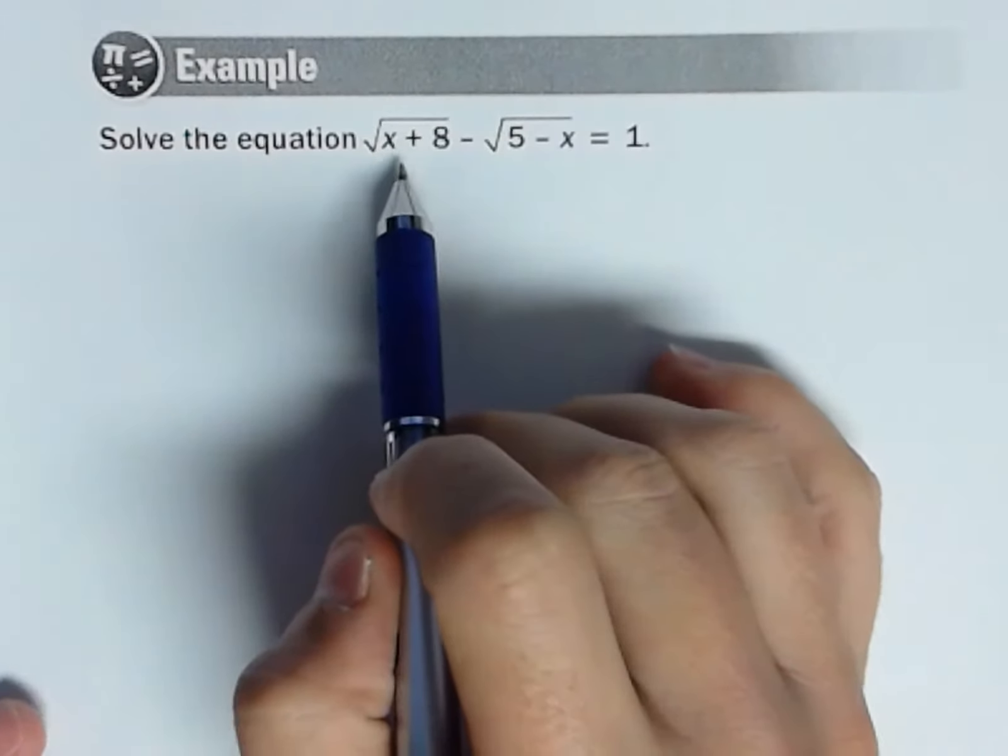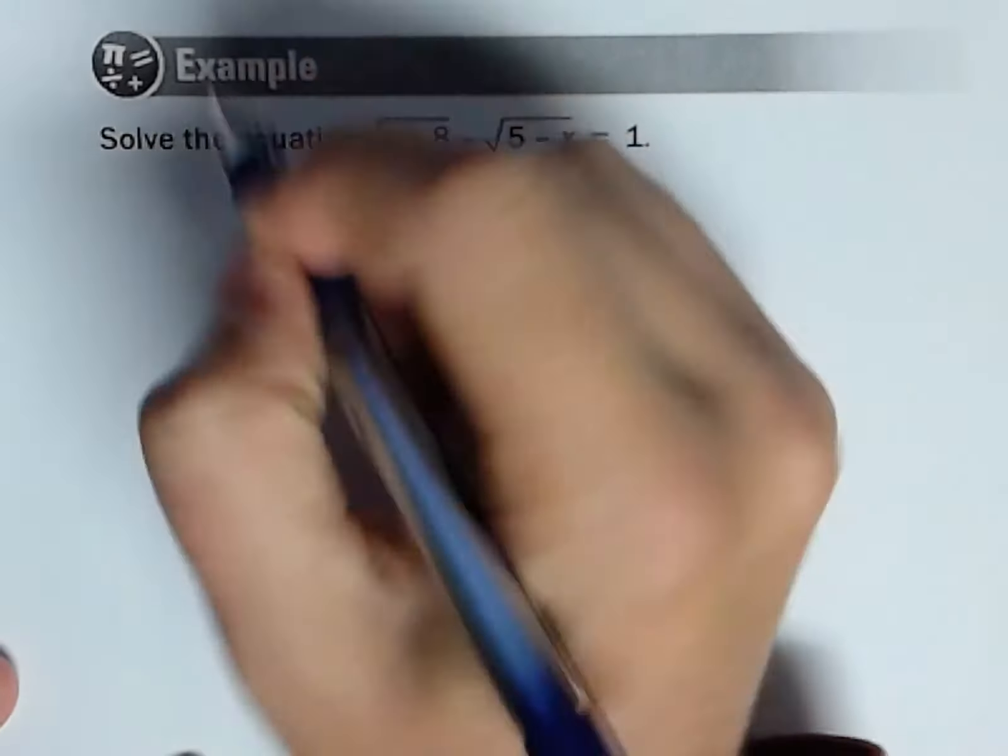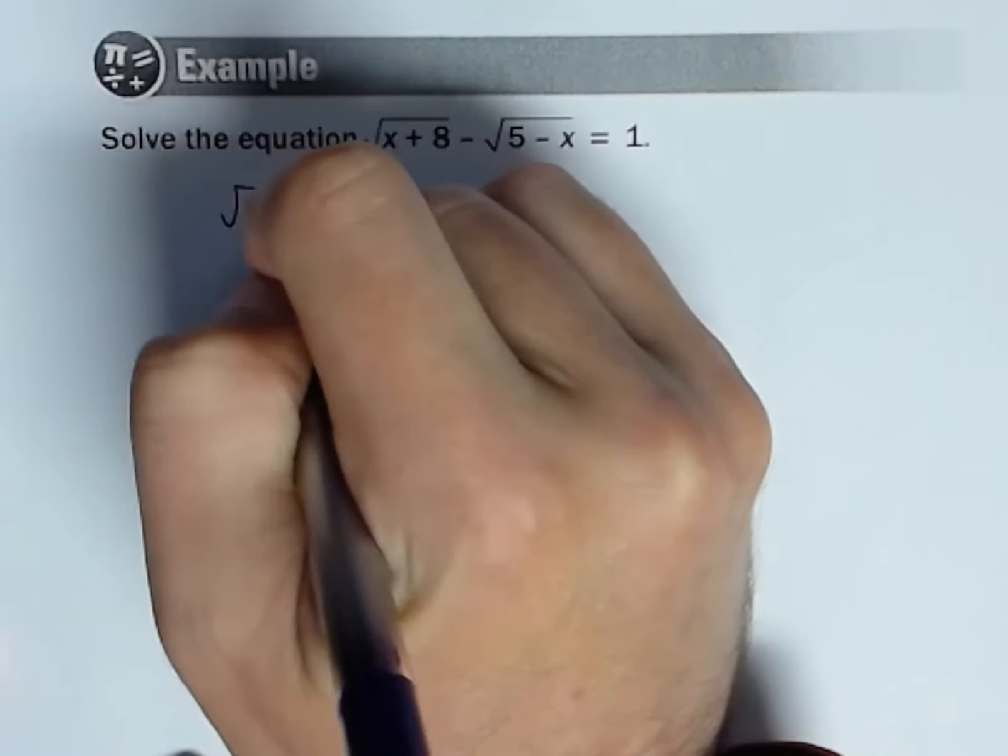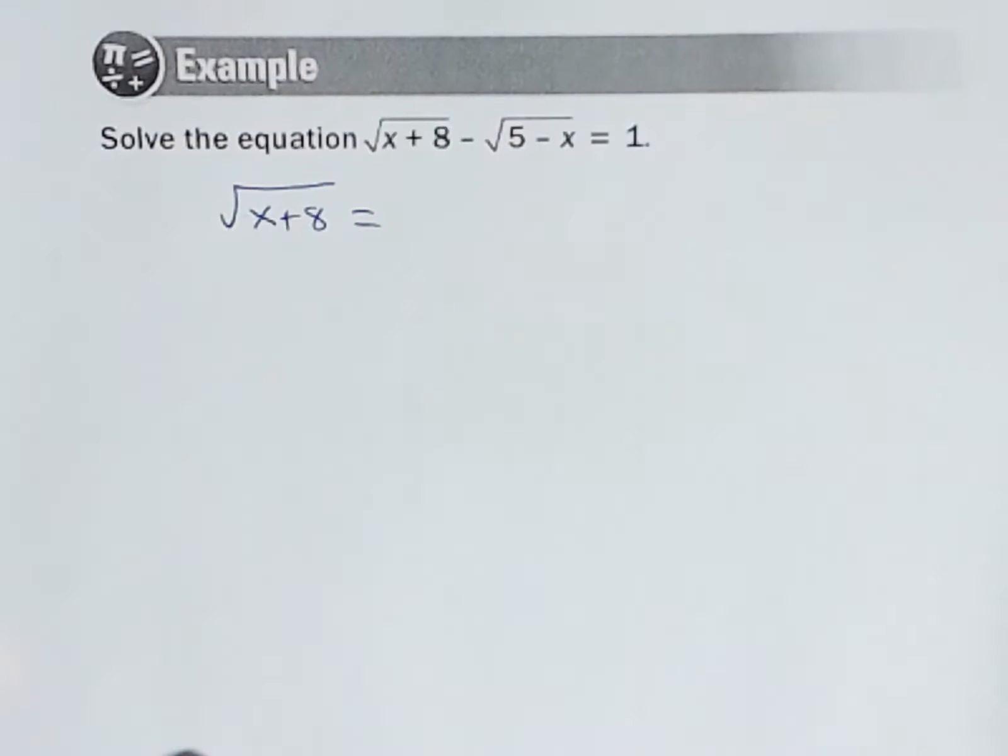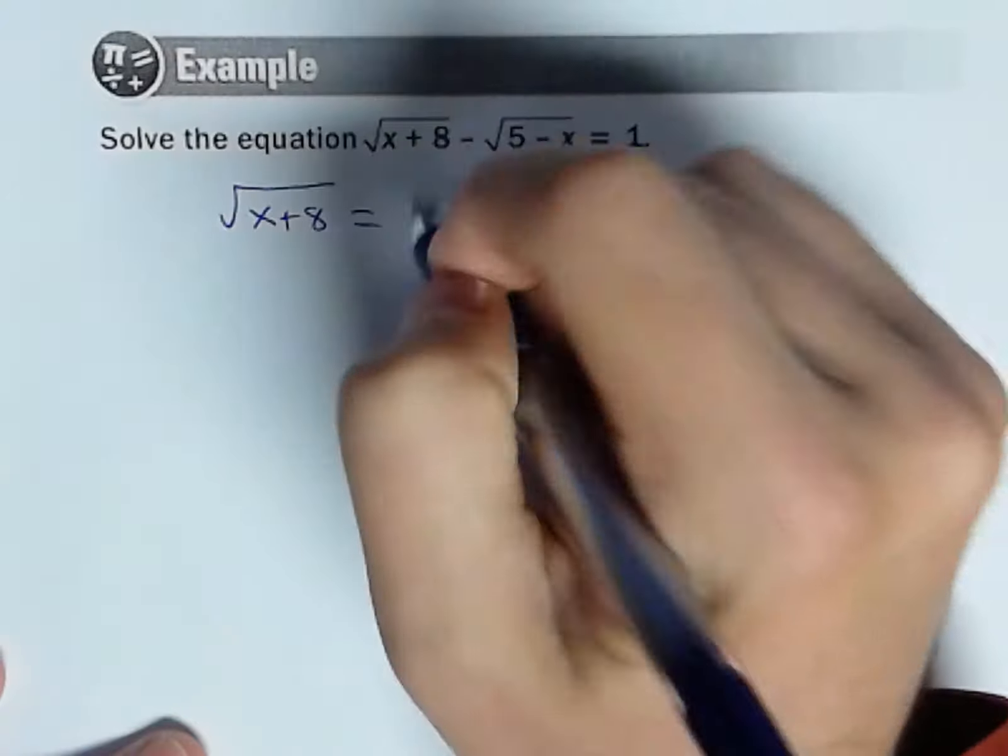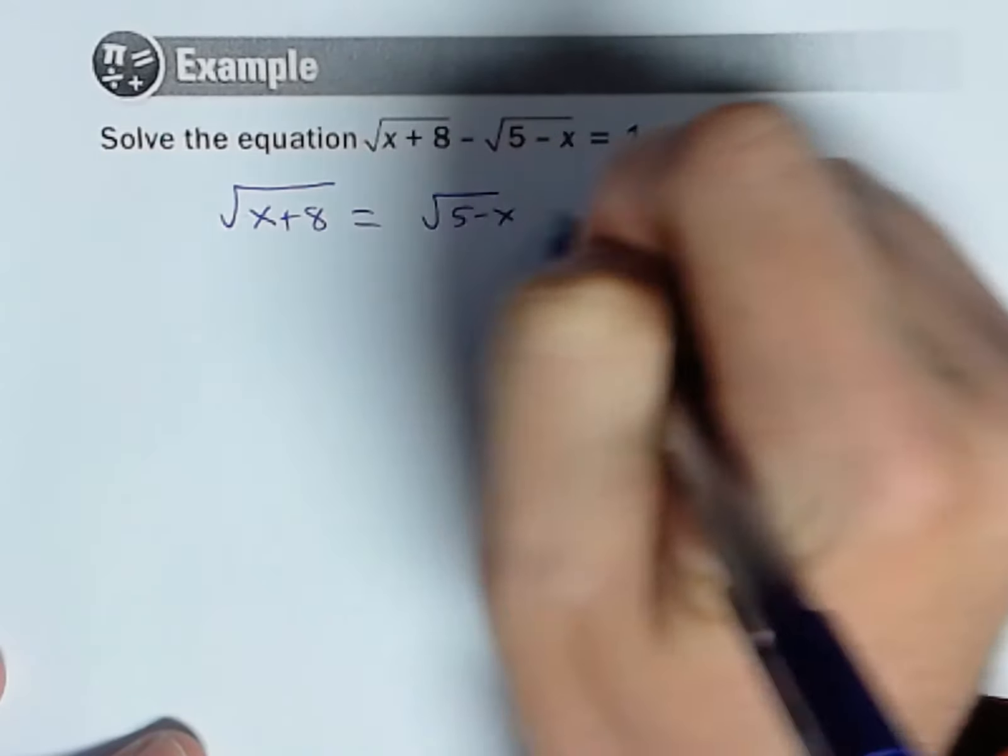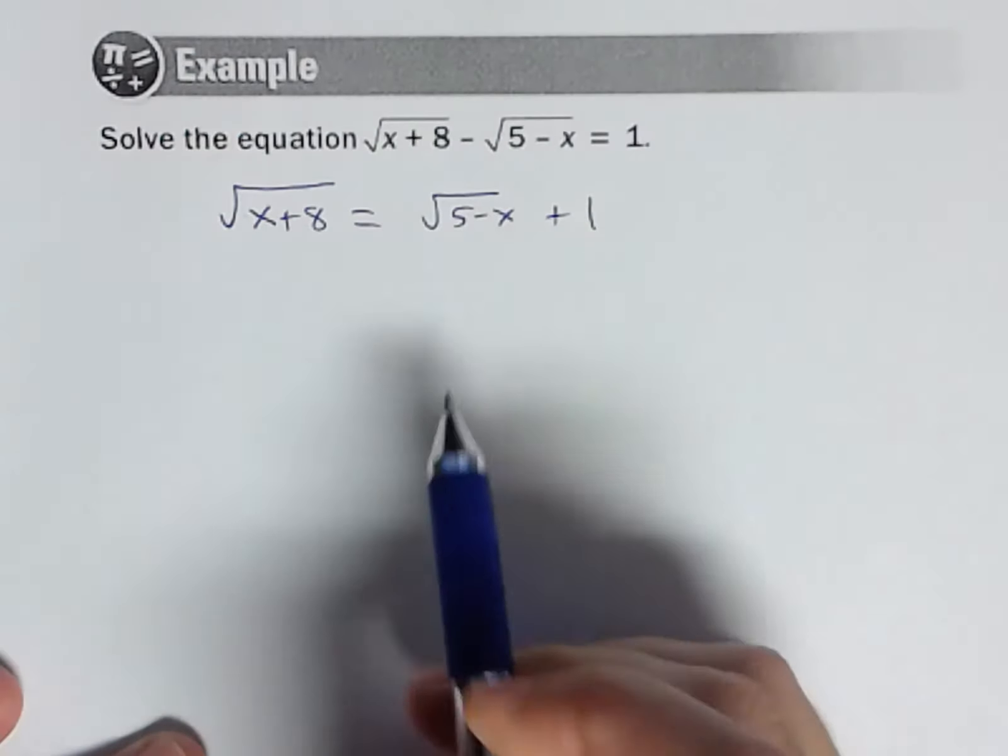So let's go ahead and isolate this x plus 8. Let's add this radical over. So we have the square root of x plus 8 equals, and you can do it however you want here, I'll just do square root of 5 minus x plus 1.